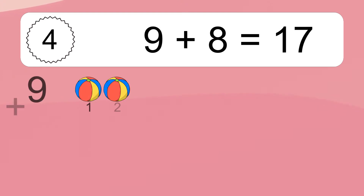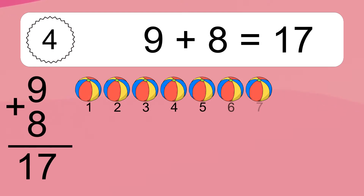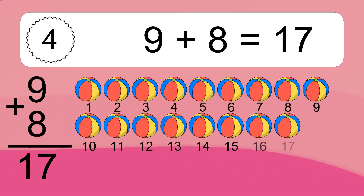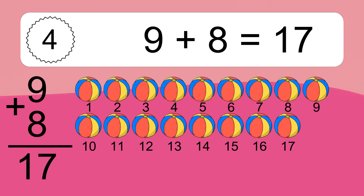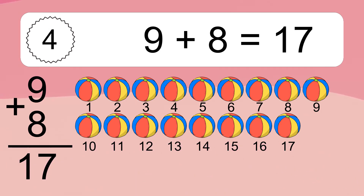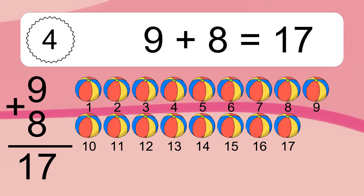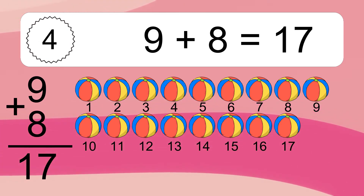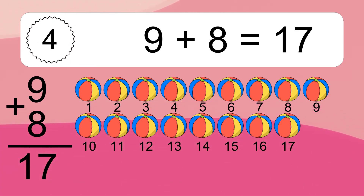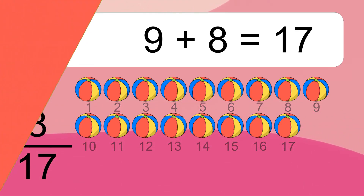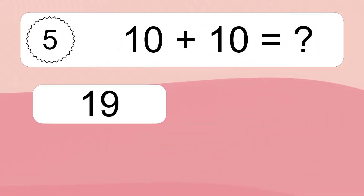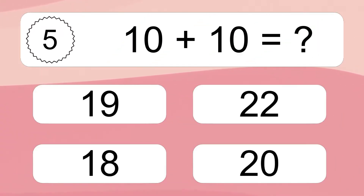9 plus 8 equals what? 9 plus 8 equals 17. Let's count it: 1, 2, 3, 4, 5, 6, 7, 8, 9, 10, 11, 12, 13, 14, 15, 16, 17.